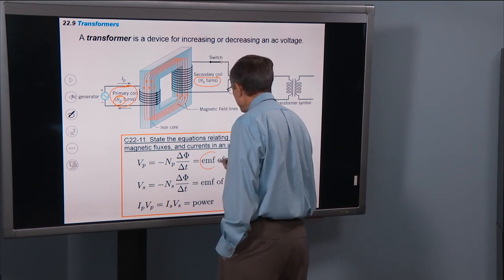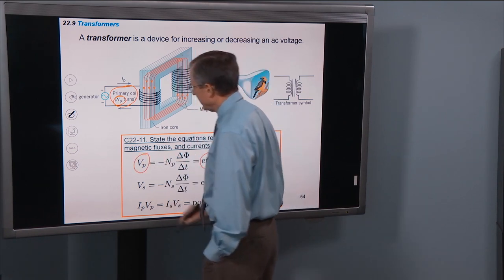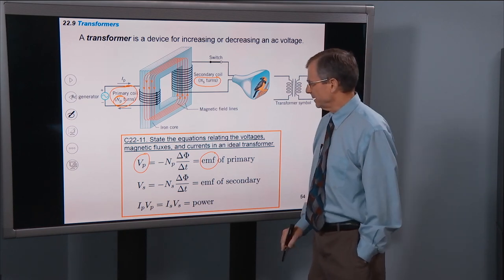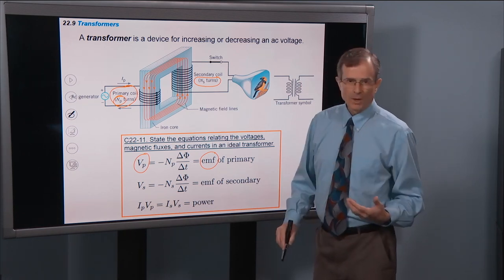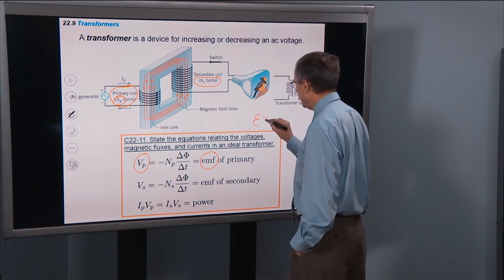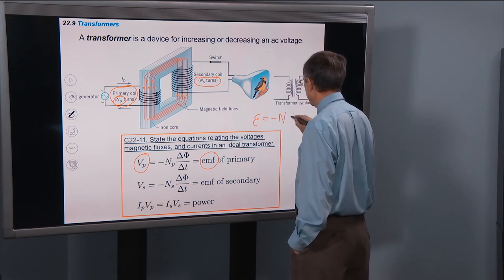The emf of the primary, we'll write as Vp. That's the, Faraday's Law, was normally written as the emf is minus N Δφ divided by Δt.